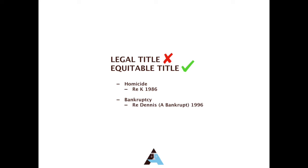The equitable title can also be severed by homicide. If a joint tenant kills another joint tenant, the right of survivorship would normally apply. However, one should not profit from a crime, and the killing of another joint tenant is treated as severance of the joint tenancy. Nevertheless, under the Forfeiture Act 1982, the court has the discretion to modify the forfeiture rule in cases of homicide — but not murder.